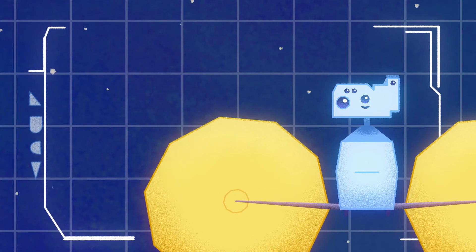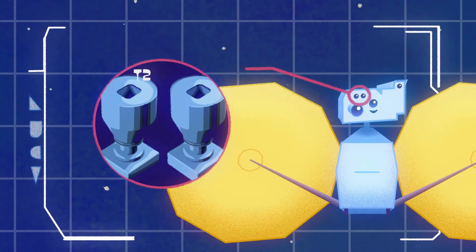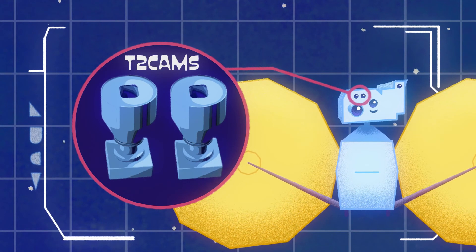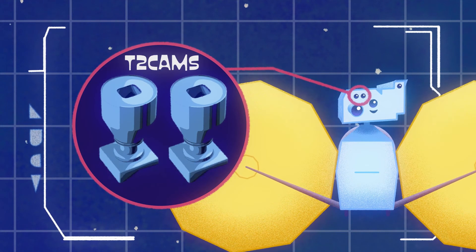Lastly, you couldn't get the job done without your tracking cameras or the T2 cams, to make sure the asteroids are always in view. And the high-gain antenna that lets you communicate with Earth.